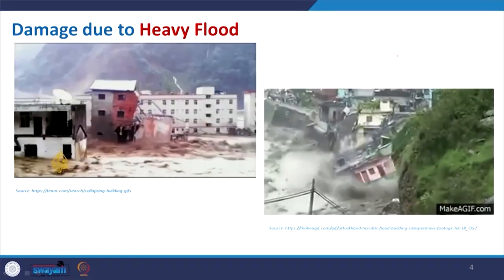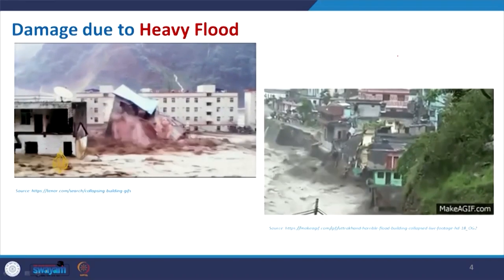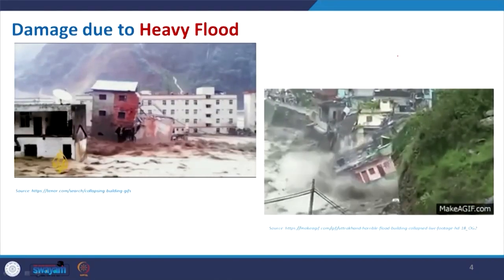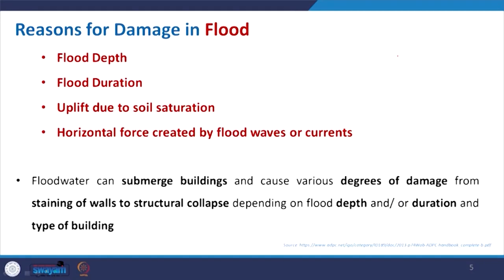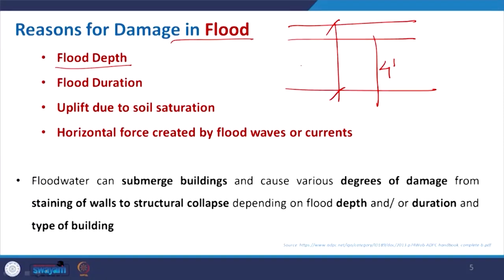With flood water, the soil will become very loose and suddenly lose its bearing capacity, which may result in building collapse. The reason for damage in a flood depends on flood depth — if the flood depth is say 4 to 6 feet, the velocity and depth together will determine the extent of damage. The slope of terrain decides the movement and velocity of water flow.